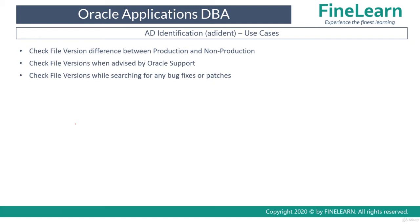So when do we really need to use the adident utility? For example, if you are having an issue in production but not in non-production, it may be because you applied some additional patches in non-production that have not yet been applied in production. You can identify a specific SQL in one of the product tops and run the adident command for that file in both production and non-production to compare the versions.